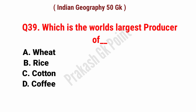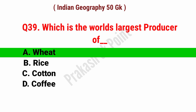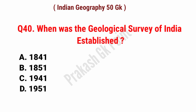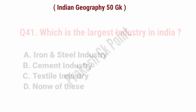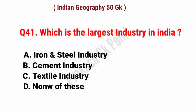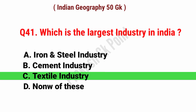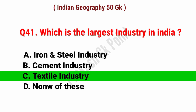Which is the world's largest producer of gas? Answer: option A, wheat. When was the Geological Survey of India established? Answer: option B, 1851. Which is the largest industry in India? Answer: option C, Textile Industry.